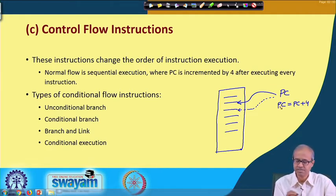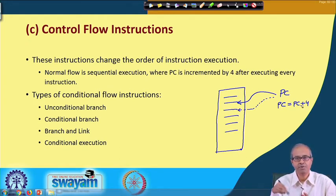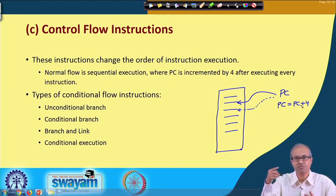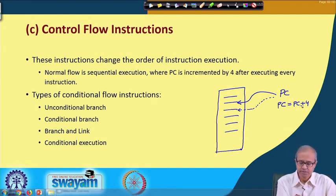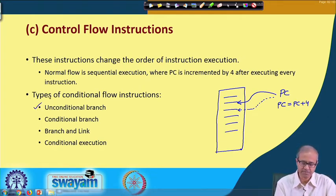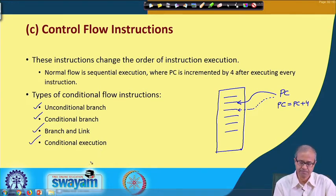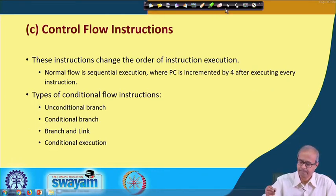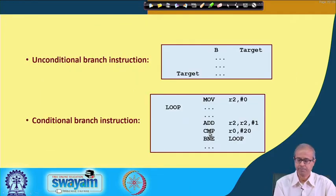In control flow, the PC is not incremented by 4; rather, you are updating PC with some other value, so the next instruction will be fetched from somewhere else. In terms of types, control flow instructions can be: unconditional branch, conditional branch, branch and link, and conditional execution instructions — broadly these four categories.